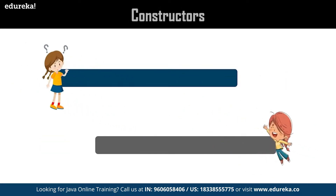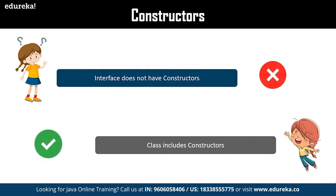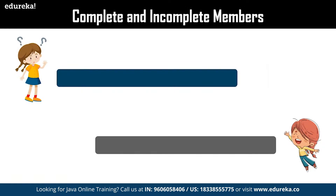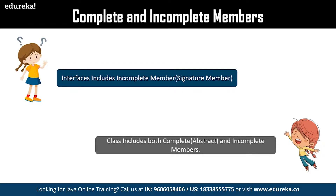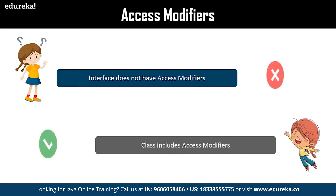The next difference is constructors — interface does not have constructors, while classes take advantage of constructors to set values to members of an object. The next difference is complete and incomplete members — interfaces comprise only methods with signatures, while classes include both data members (abstract members) and methods (signature members). Regarding access modifiers, interfaces by default take public as their access modifier, whereas classes provide private access modifiers not available in interfaces.